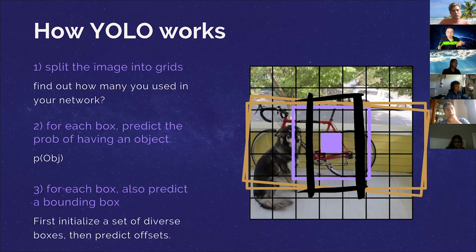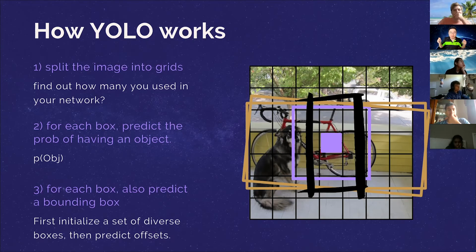Now, YOLO also does something smart. That is, once it proposes these anchor boxes, it's only trying to adjust the width and height of the anchor boxes so that it would actually fit the object. So that's step number three.